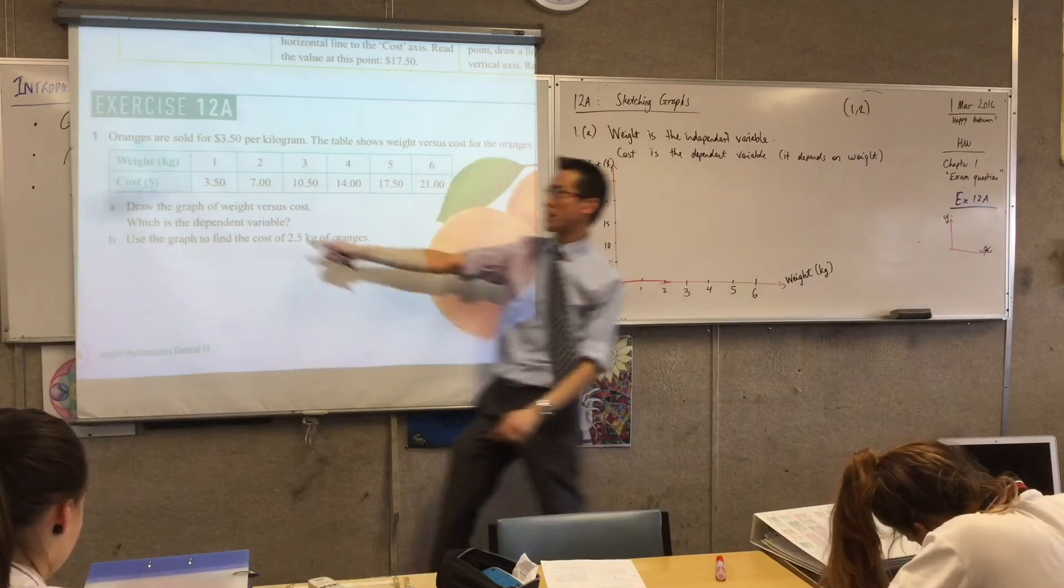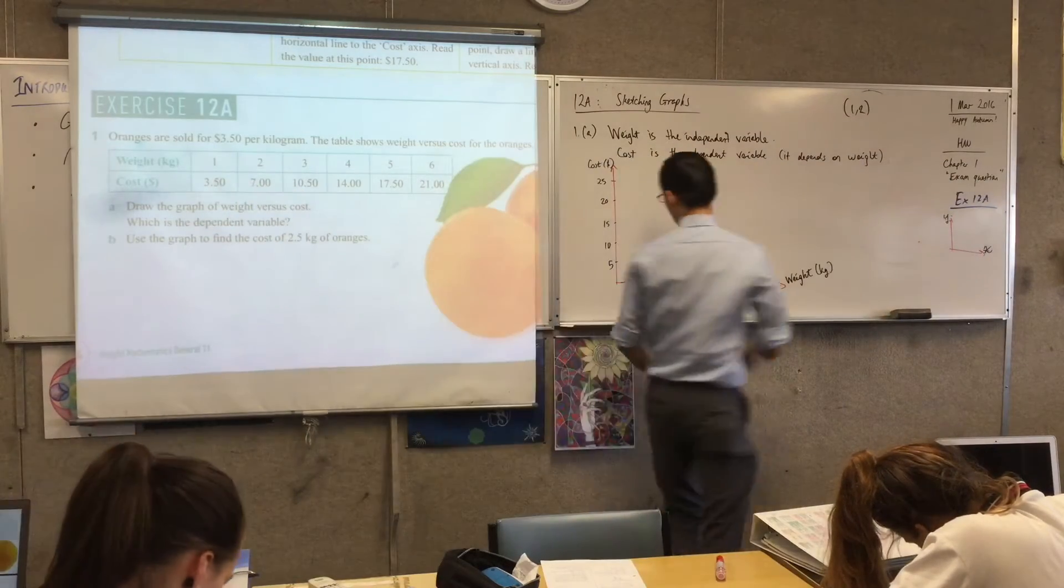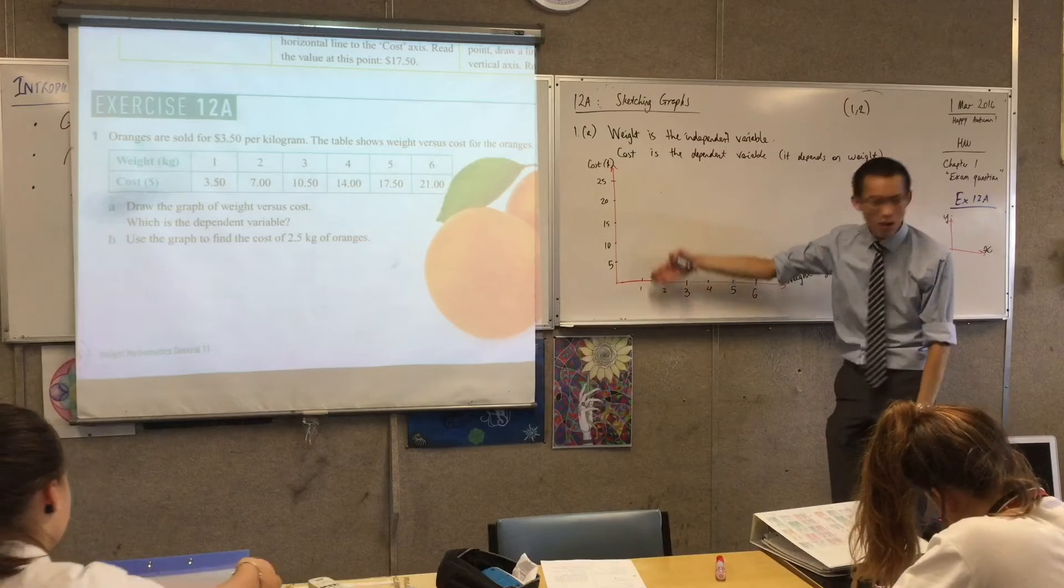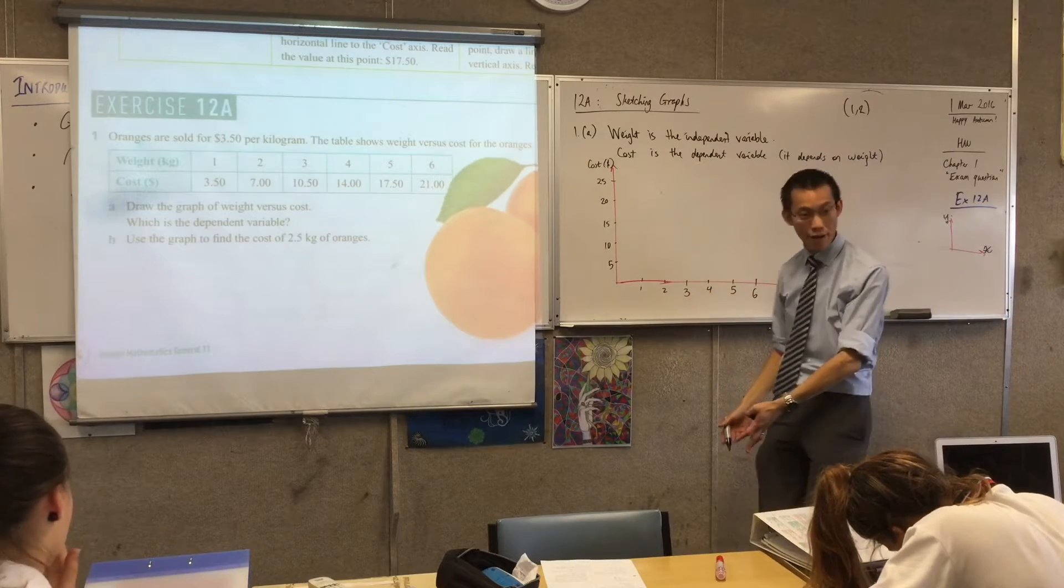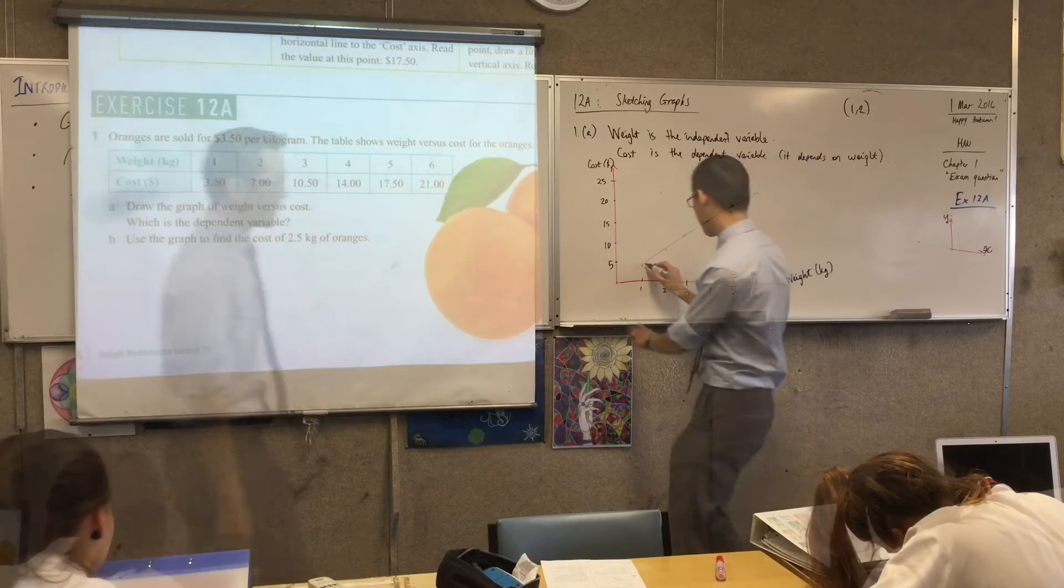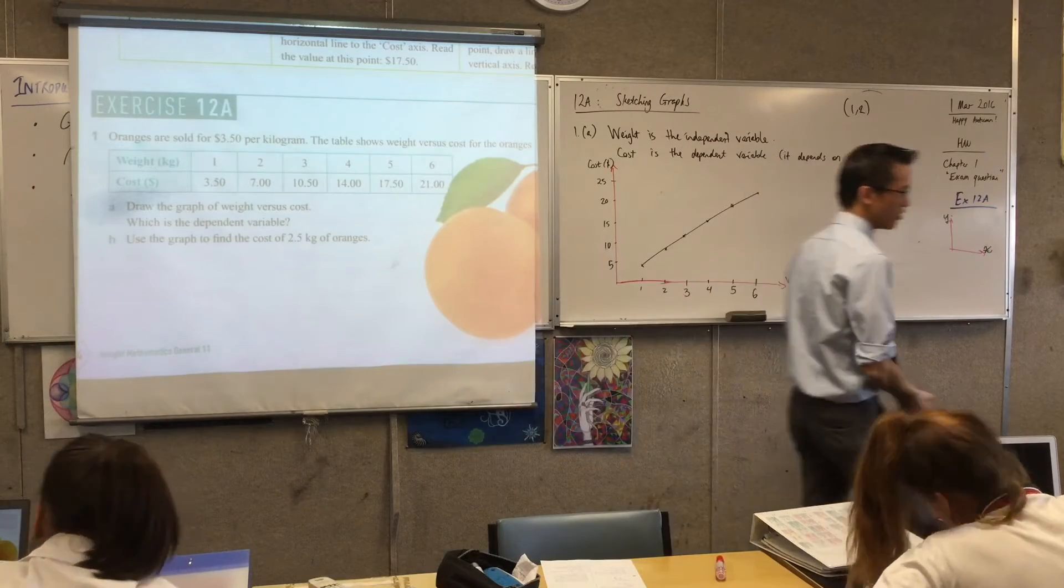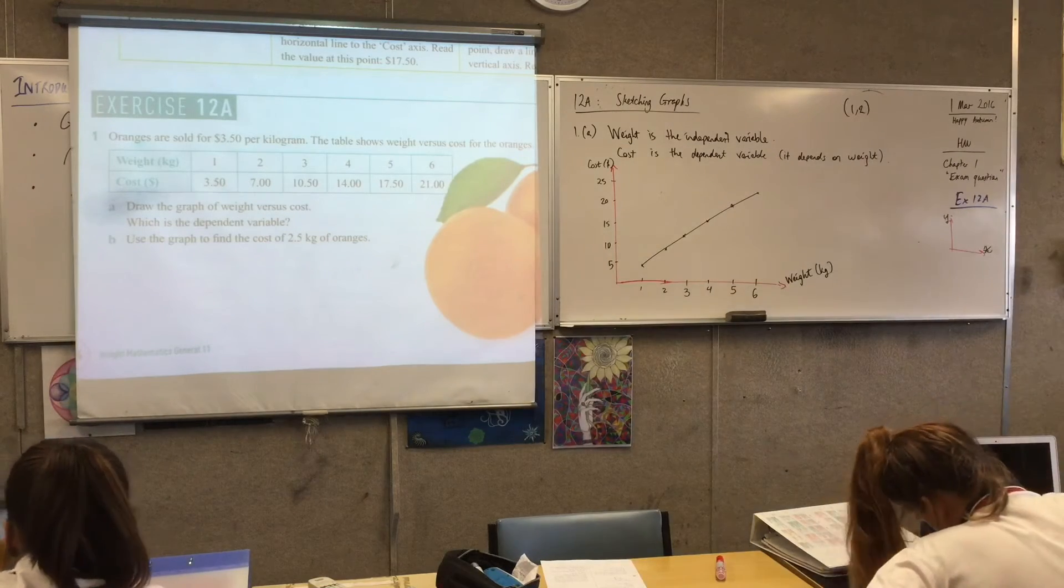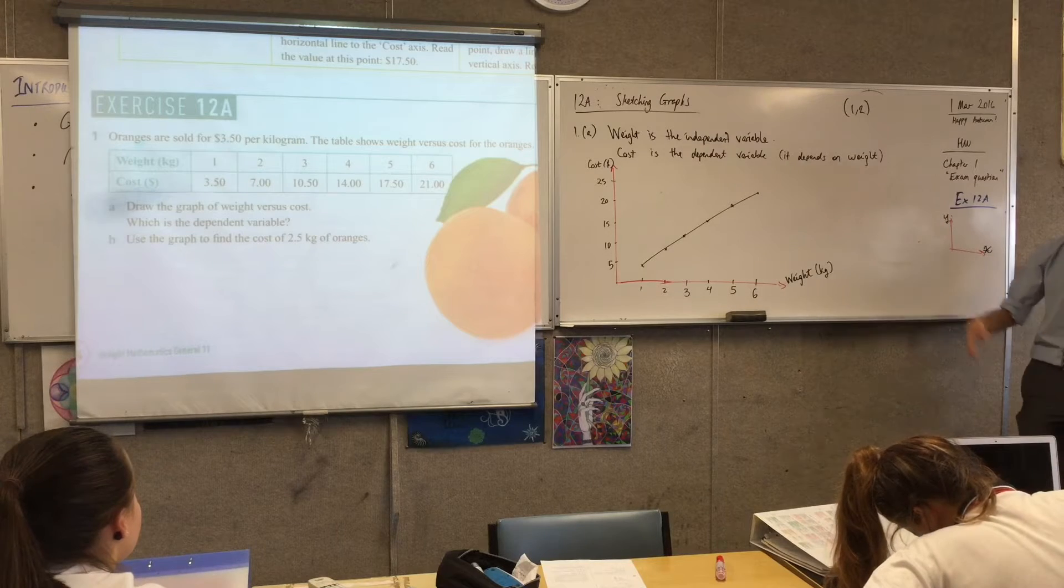So here's 1, and you can read off where 3.5 is going to be on your graph. So let's do this together. I'll encourage you to draw, generally speaking, your axes in pen,